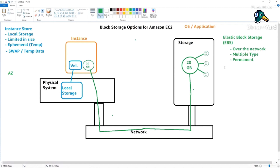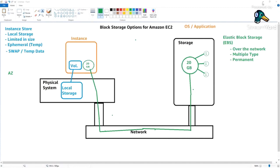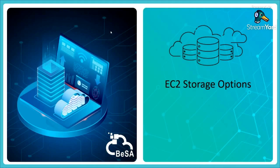EBS is the more common option. You can use it for any operating system, database, or log storage - it's purely up to you. On a single instance, you can have multiple disks mounted with different capacities and performance characteristics - for example, a 10 GB OS disk with 3000 IOPS and a 200 GB database disk with 5000 IOPS. Let me quickly show you how an EBS volume is created, then we'll take a short break.